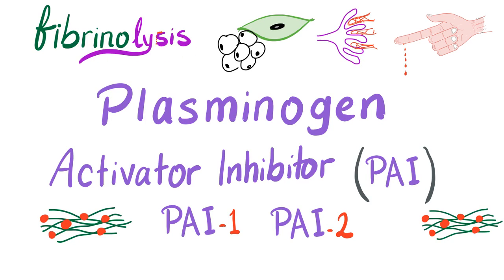It's a good day and this is your favorite medical channel, Medicosis Perfectionalis. Continuing our discussion on bleeding and coagulation disorders, we have started talking about fibrinolysis before. Today we'll talk about plasminogen activator inhibitor or PAI. We have PAI1 which comes from the endothelium and adipose tissue, as well as PAI2 which comes from the placenta.